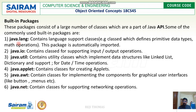java.lang is a package which will be imported automatically in every program. It is going to give you support for the classes — like primitive data types and mathematical operations — all defined inside this java.lang package. The second one is java.io, which provides support for input-output operations. Like other languages, Java also has its own input-output operations, and to support this we use the package java.io.